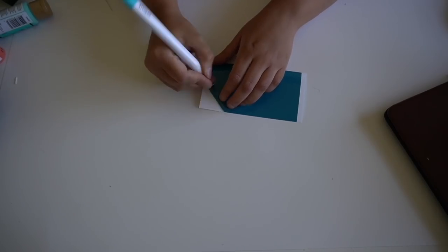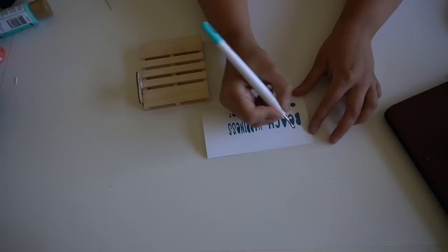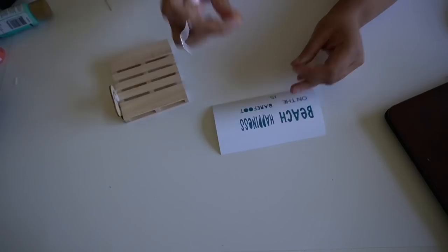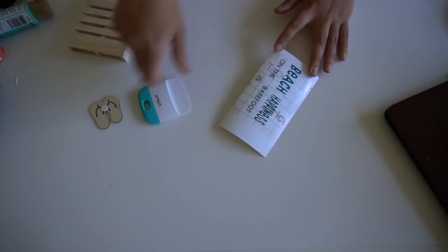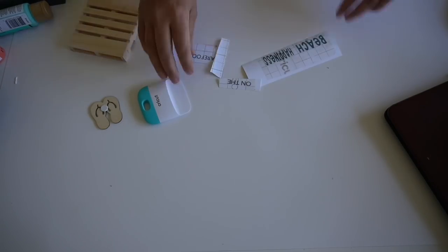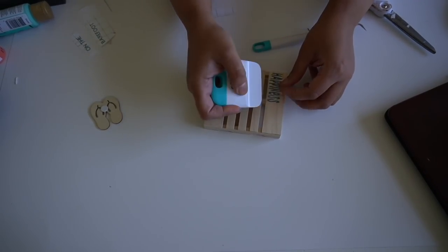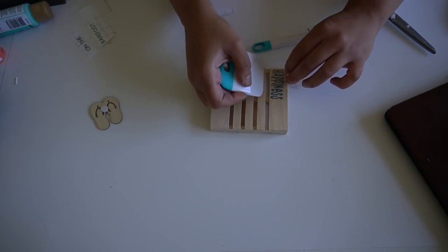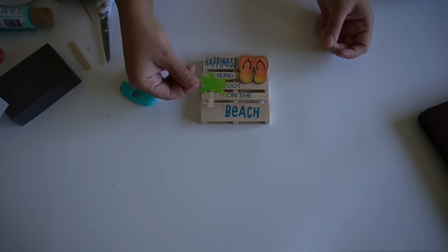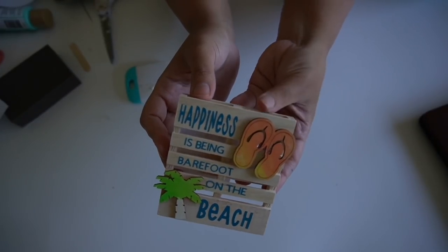And I'm using permanent vinyl, but you can use whatever you want. Now I'm weeding this all together and I'm going to go ahead and place transfer tape all together, but then I'm going to cut it down to make my life a little easier. This is how it turned out. I spaced it out this way so I can fit my flip-flop and palm tree. They have adhesive tabs, but of course you can hot glue them in place. And this is what it looks like.